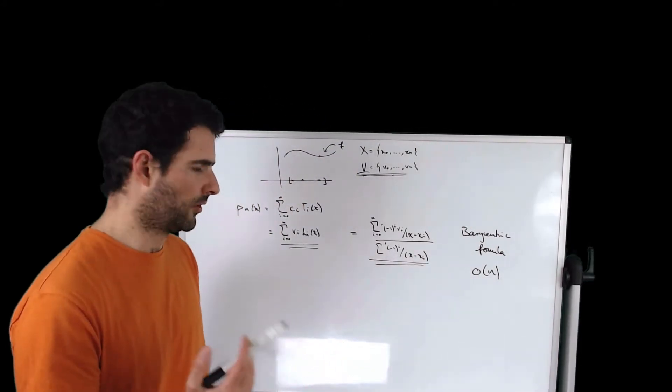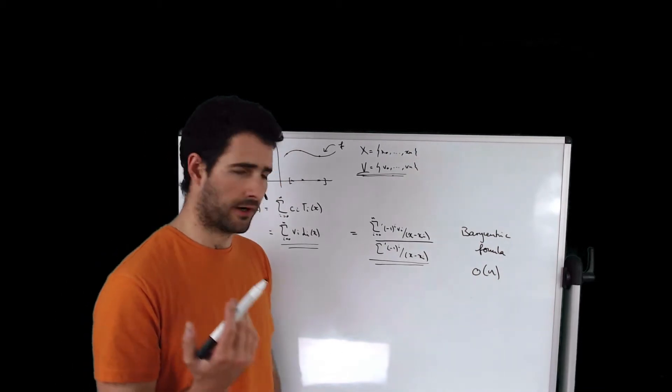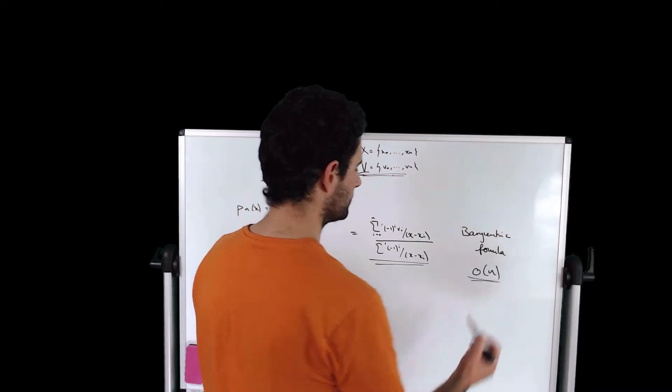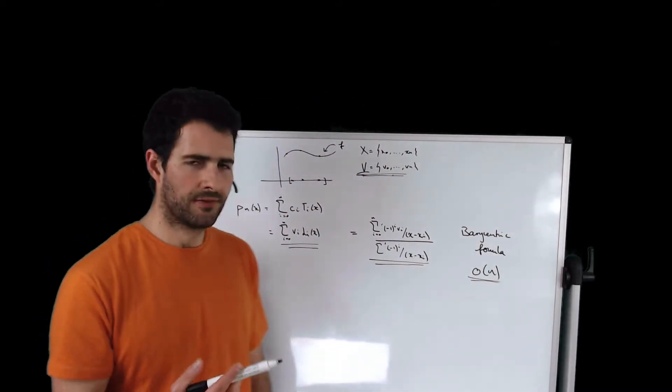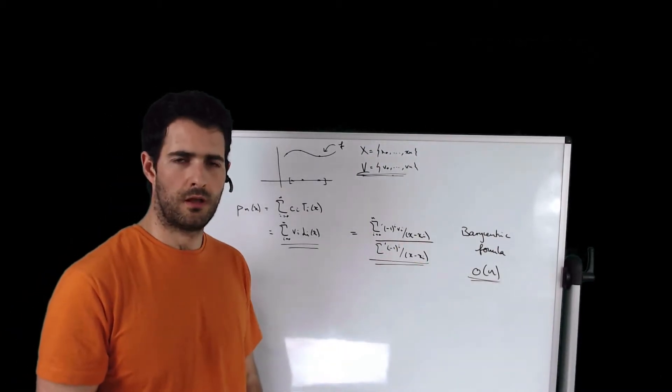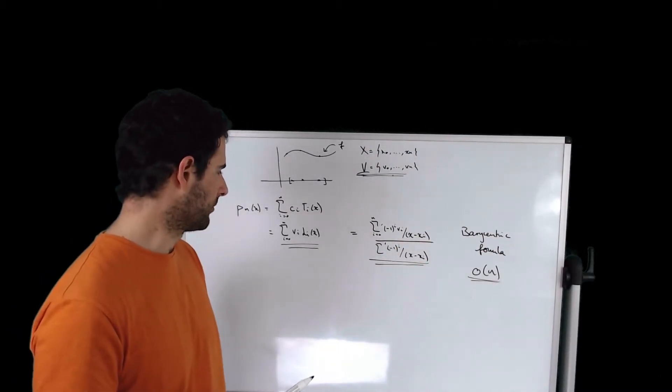Now that formula has two advantages. One of them is that it's very quick to evaluate, its complexity being O(n), and the second one is that it's numerically very stable. So all good when we use this barycentric interpolation formula.